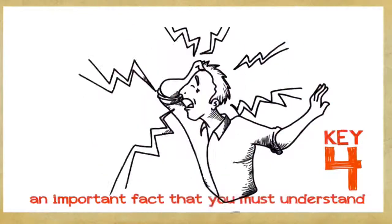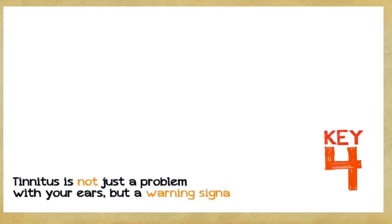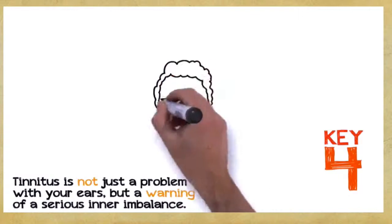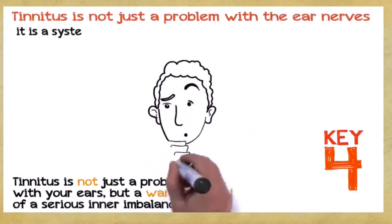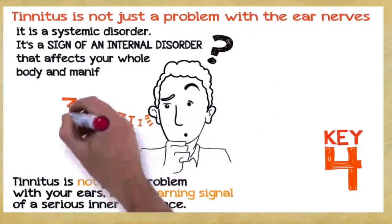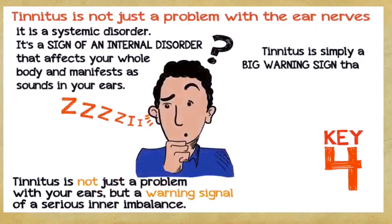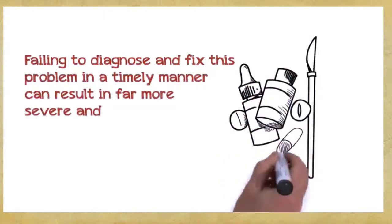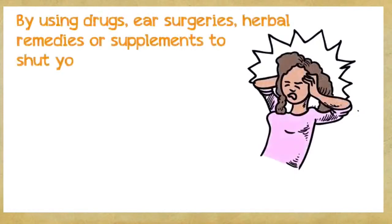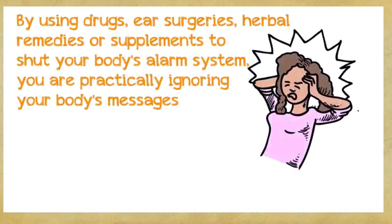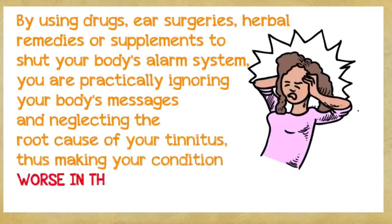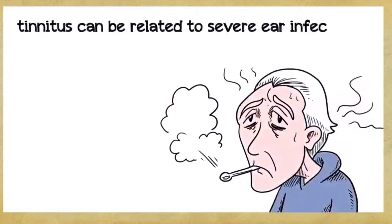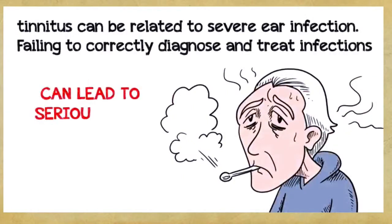Key number four: This is a very important fact that you absolutely must understand. Tinnitus is not just a problem with your ears, but a warning signal of a serious inner imbalance. In the vast majority of cases, tinnitus is not just a problem with the ear nerves, it's a systemic disorder. It's a sign of an internal disorder that affects your whole body and manifests as sounds in your ears. Tinnitus is simply a big warning sign that something inside your system is wrong and needs to be corrected. Failing to diagnose and fix this problem in a timely manner can result in a far more severe and chronic disorder.